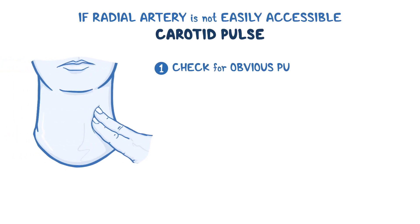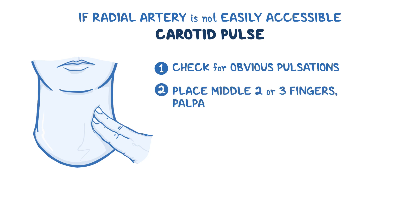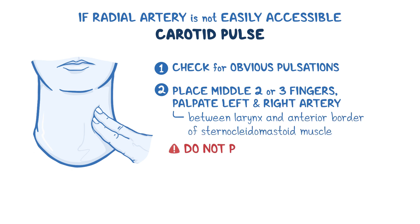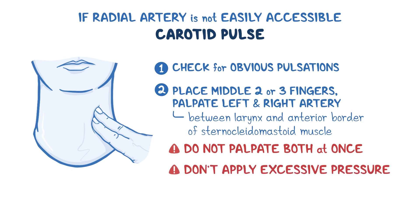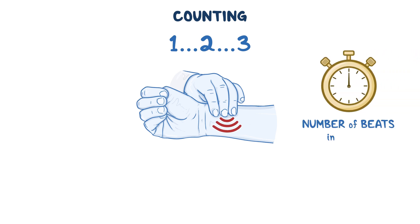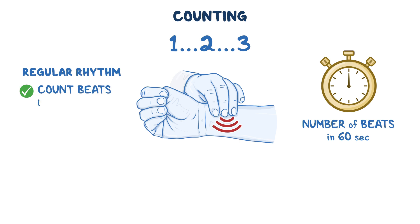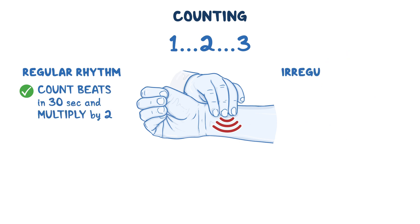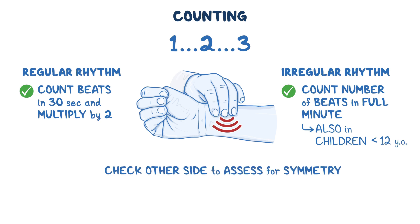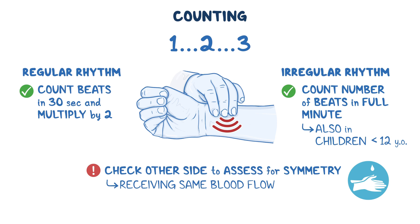In an emergency or if the radial artery is not accessible, obtain the carotid pulse. First check for obvious pulsations, then using your middle two or three fingers, gently palpate the left then right artery between the larynx and the anterior border of the sternocleidomastoid muscle. Do not palpate both arteries at once, and don't apply excessive pressure as that would reduce blood flow to the brain. Count the first beat as one, the second as two, and so on for 60 seconds. In a regular rhythm, you may count for 30 seconds and multiply by two. If the rhythm is irregular or the patient is under 12 years old, count for a full minute. Check both sides to assess for symmetry.